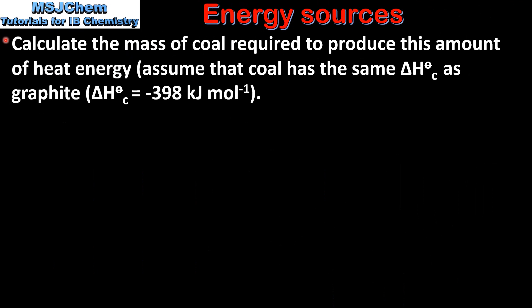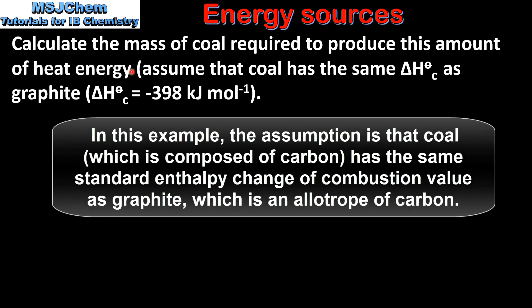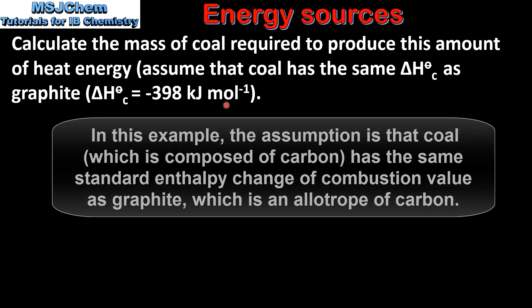Next we will calculate the mass of coal required to produce this amount of heat energy. Assume that coal has the same standard enthalpy change of combustion as graphite, which is −398 kJ mol⁻¹.